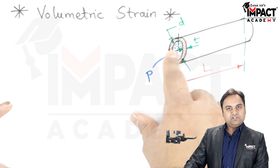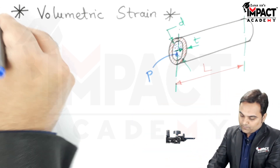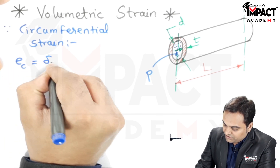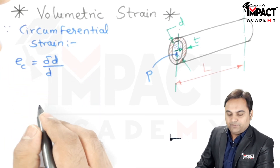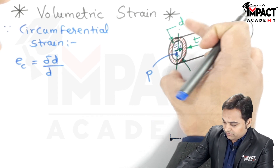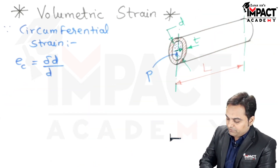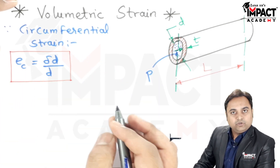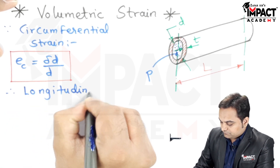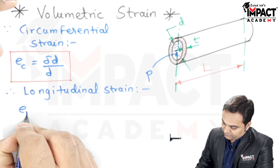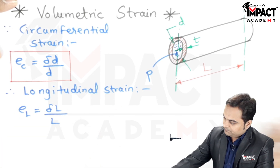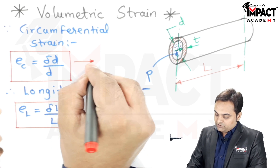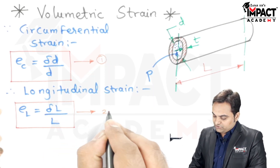First I will write down the circumferential strain. Circumferential strain is the change in diameter upon the original diameter, because circumferential strain is due to the circumferential stress changing the diameter. Similarly, the longitudinal strain, denoted by E suffix L, is the change in length upon original length. Since both are strains, they won't have any unit. I will give these as equation 1 for circumferential strain and equation 2 for longitudinal strain.